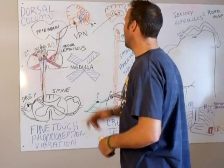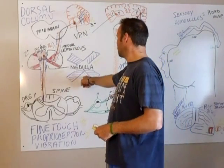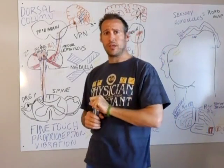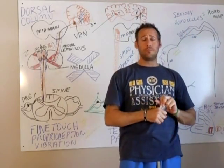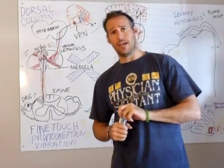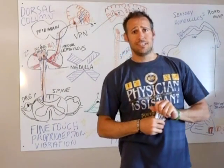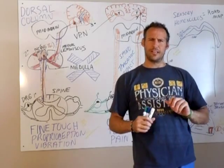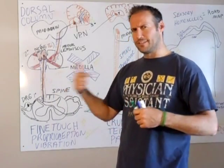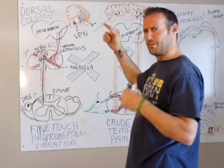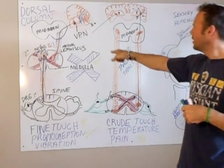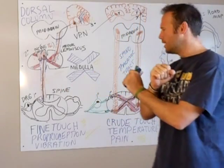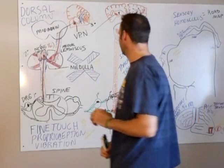So the dorsal column crosses in the medulla. If you've seen The Waterboy — 'something wrong with your medulla oblongata' — the guy gets tackled and ends up on his back. So the dorsal column crosses in the medulla oblongata.